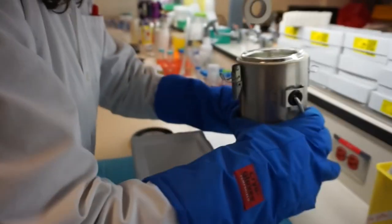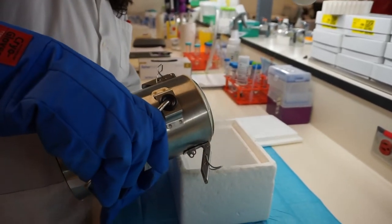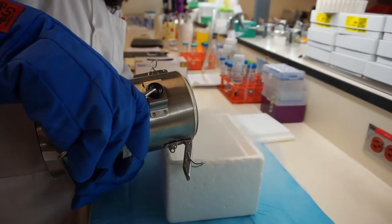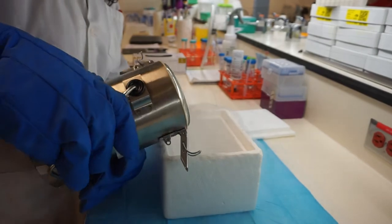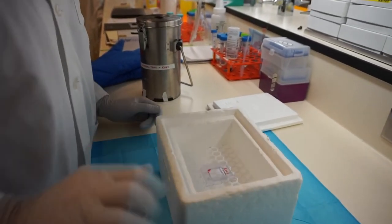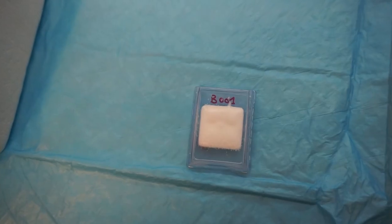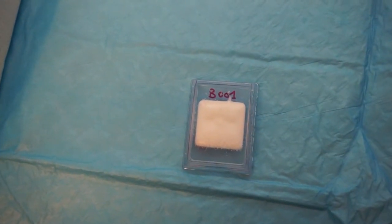Pour liquid nitrogen in a styrofoam box containing a raised grid. Make sure to use the appropriate protection equipment when working with liquid nitrogen. The mould should be laying flat and should be in contact with the gaseous phase of the nitrogen, but not the liquid one. After a few minutes, the block should be frozen and should be completely white.